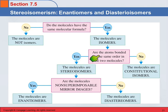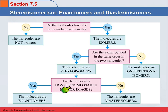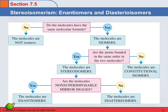If the atoms are bonded in the same order, then they're stereoisomers. And then you have to look at whether they are non-superimposable mirror images. Diastereomers are not mirror images. If they are non-superimposable mirror images, those are enantiomers — the chiral molecules we've been talking about today.